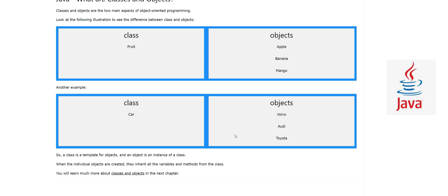Similarly for the cars, we could have some methods and parameters, and those parameters can be different values but we can have the same methods across them. A class is a template, and an object is an instance of a class. When individual objects are created — for example, when we create an object of class 'Car' called Volvo — they inherit all the variables and methods from that class. Variables could be things like number of doors, color of the car, number of wheels, and other properties.